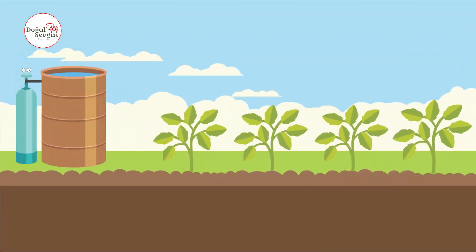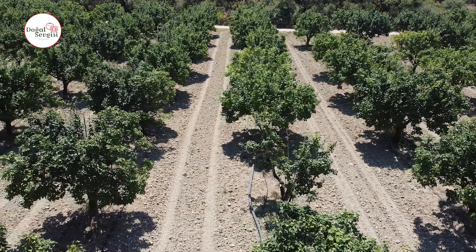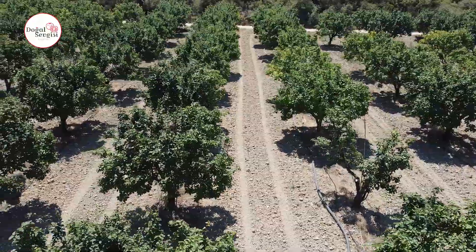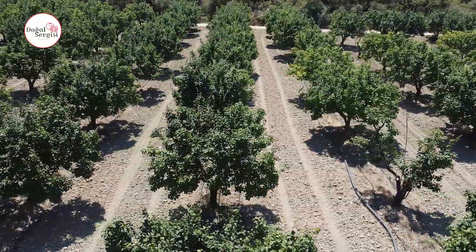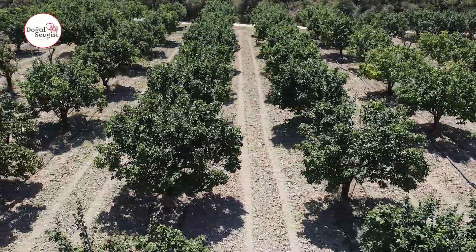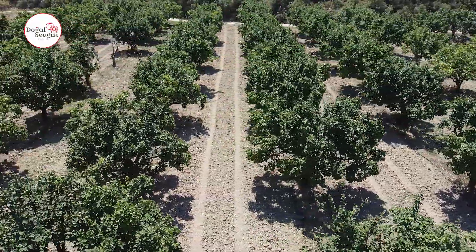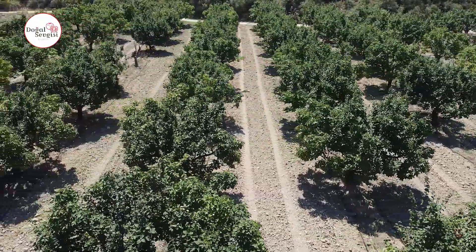Subsurface drip irrigation is an irrigation method that allows water and fertilizer to be delivered directly to the root zone of the plant through drip pipes laid underground. In this method, water and fertilizers are given slowly and in small amounts through the holes in the drip pipes, ensuring efficient use of water and fertilizer.